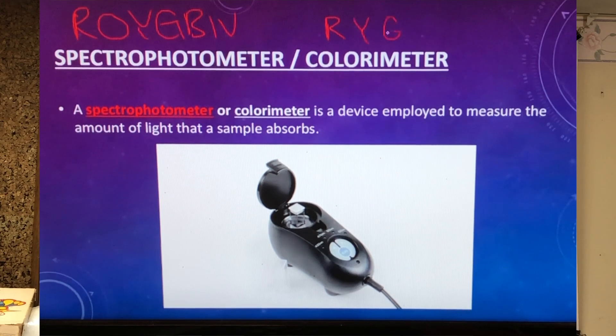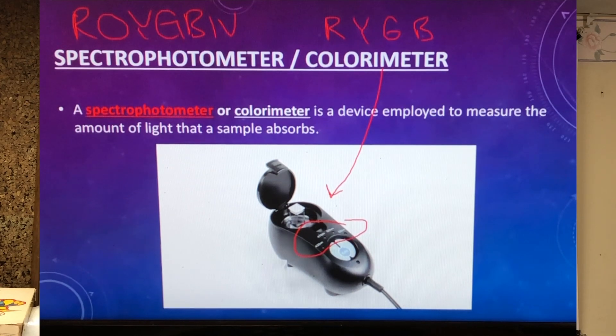We, however, have a colorimeter, which measures wavelengths at four specific wavelengths. And those typically are red, yellow, green, and blue.